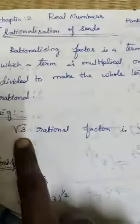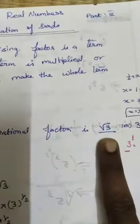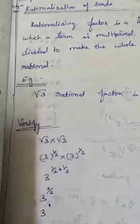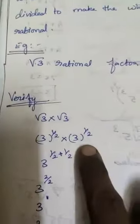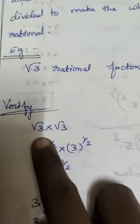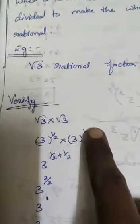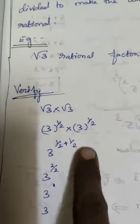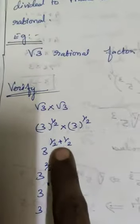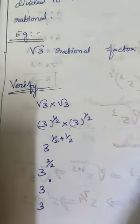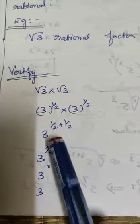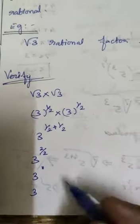So root 3, if you multiply, it becomes rational. We verify that one. Root 3 into root 3, so 3 power half times 3 power half, half plus half. The denominators are equal, so we just add it, 2 by 2. So 3 power 1, 2 cancels, so 3 power 1 is 3.